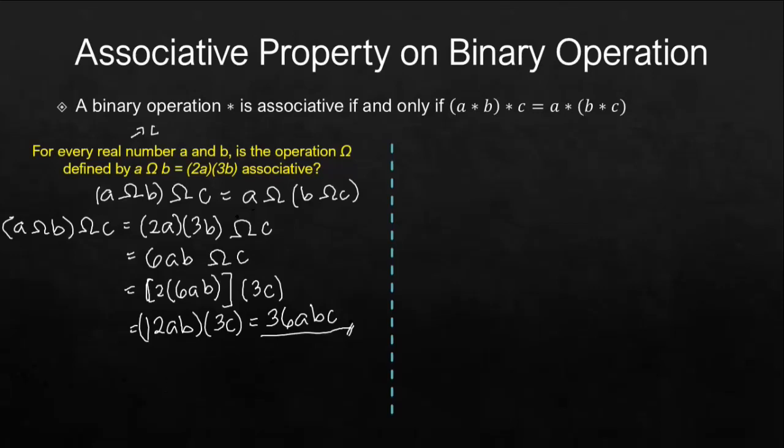Let's solve the second part. A omega B omega C. We operate first the parenthesis B omega C. B will serve as the first number. So we have here 2B, and then here is 3C. This is A omega 2B times 3C, that is 6BC. Afterwards, we can just remove the parenthesis, and we will now use 6BC as the second number for this binary operation. So we have here 2 times the first number which is A, multiplied to 3 times the second number represented by 6BC.